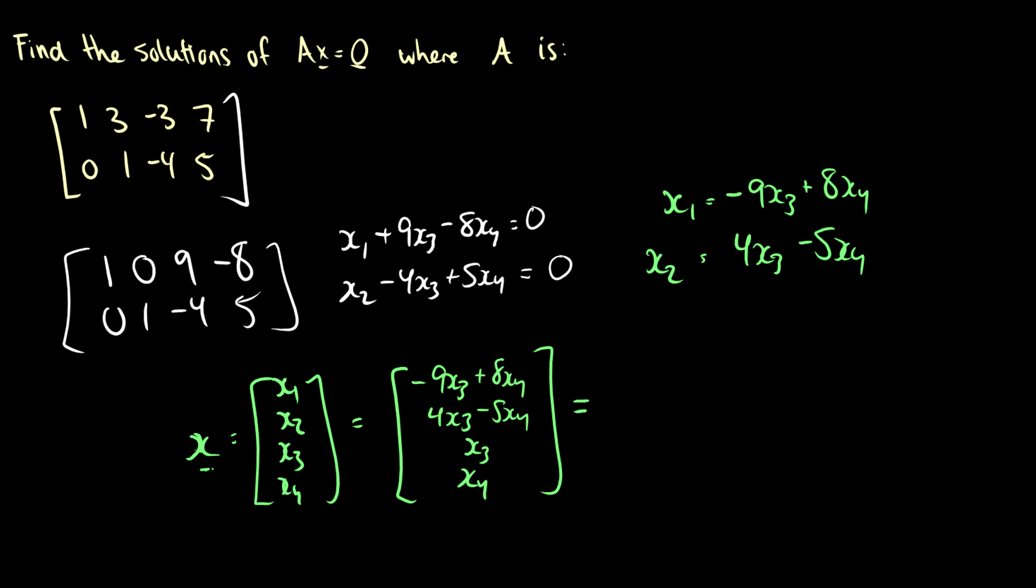So we can write this as four entries: x1, x2, x3, and x4. So let's do what we did last time. x1 is equal to -9x3 plus 8x4, x2 is equal to 4x3 minus 5x4, x3 is free, so x3 is equal to x3, and x4 is free, so x4 is equal to x4. So now we can break these up. We can say this is just [-9x3, 4x3, x3, 0] plus [8x4, -5x4, 0, x4].